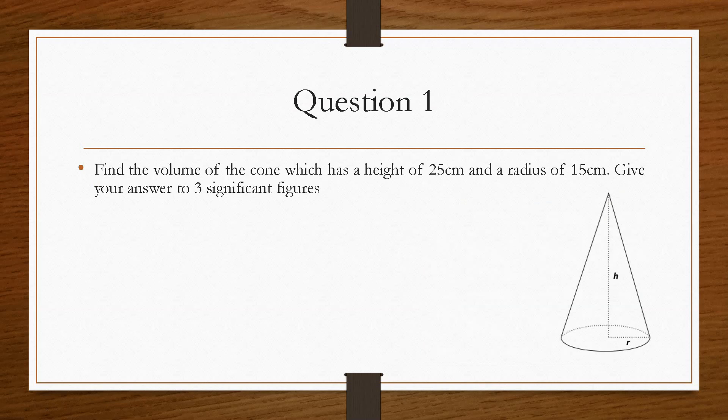So if we take a look at question number one, it says find the volume of the cone, which has a height of 25 centimetres and a radius of 15 centimetres. Give your answer to three significant figures. And this is just a generic cone here of H and R. So H being 25 and R being 15. So if we write out the appropriate formula, from the formula sheet, the volume of a cone is V = 1/3πr²h.